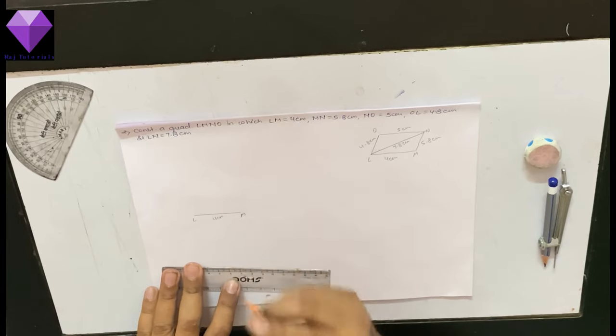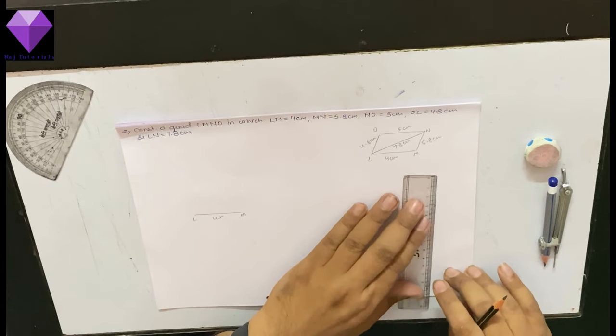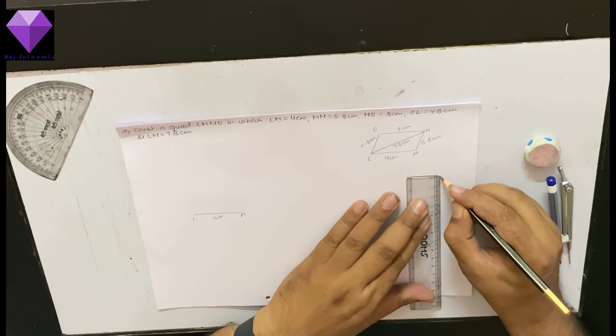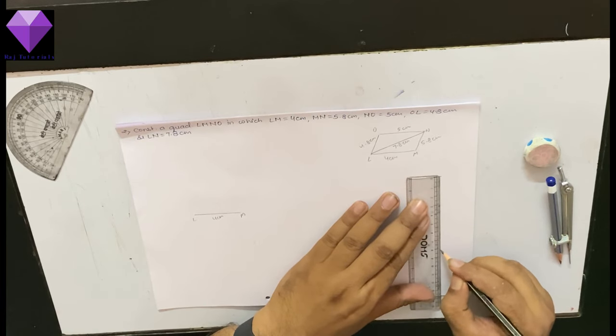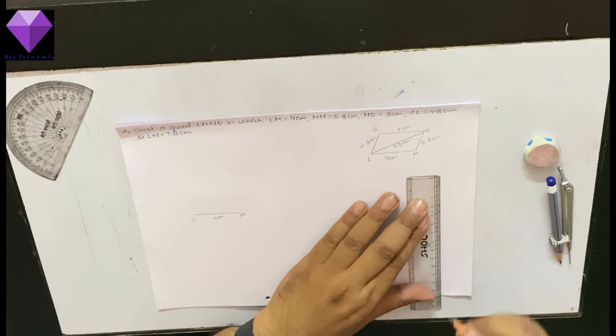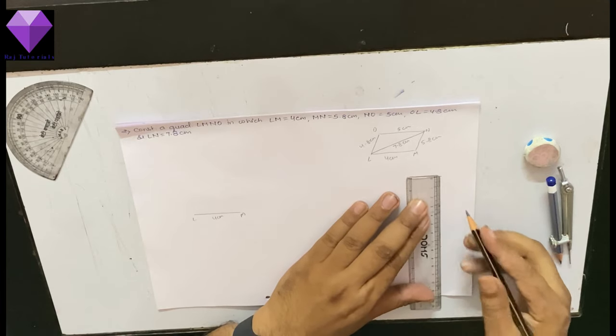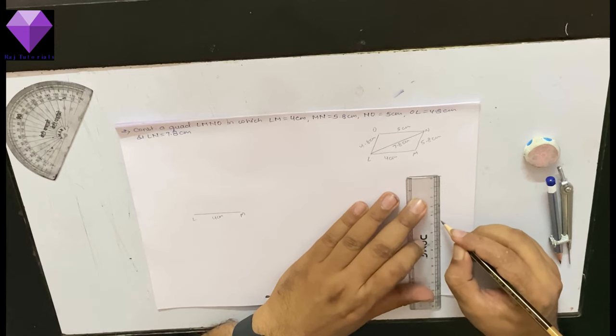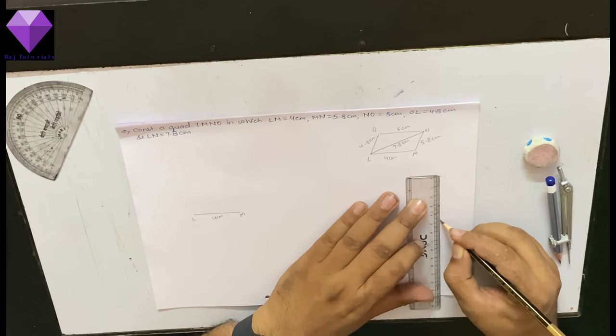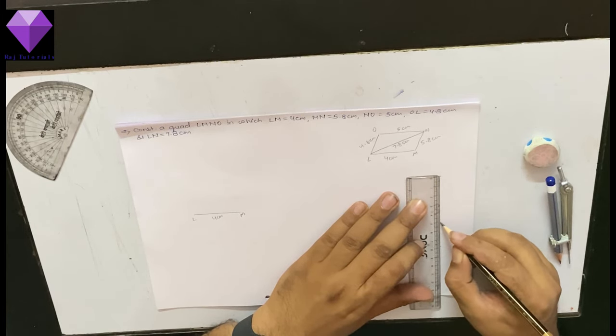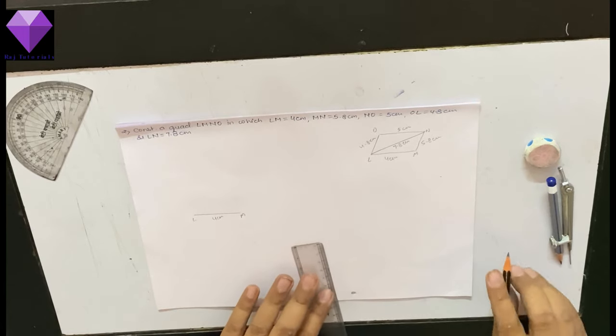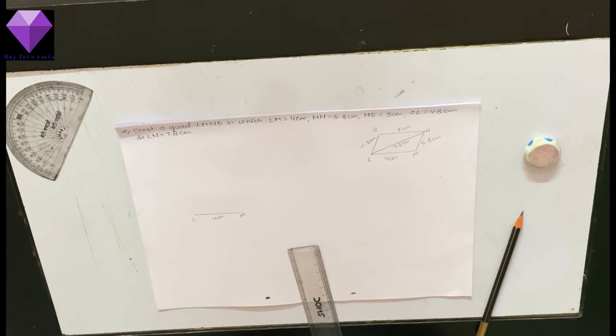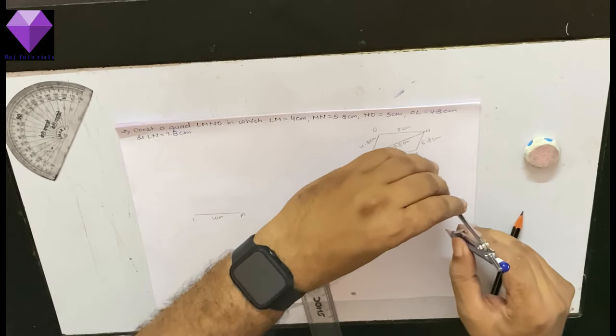With L as center and radius 7.8 cm, I have to mark one arc, and the other one I have to mark an arc of 5.8 cm, and the third arc 4.8 cm, and 5 cm. So all the measurements I have drawn. Now turn by turn, I will be taking one by one measurement.